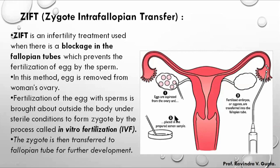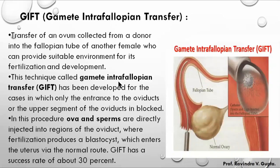This is similar to IVF but in IVF the embryo is transferred at the blastomere stage into the uterus, whereas in ZIFT the zygote is transferred into the fallopian tube. This is all about Zygote Intra-Fallopian Transfer.